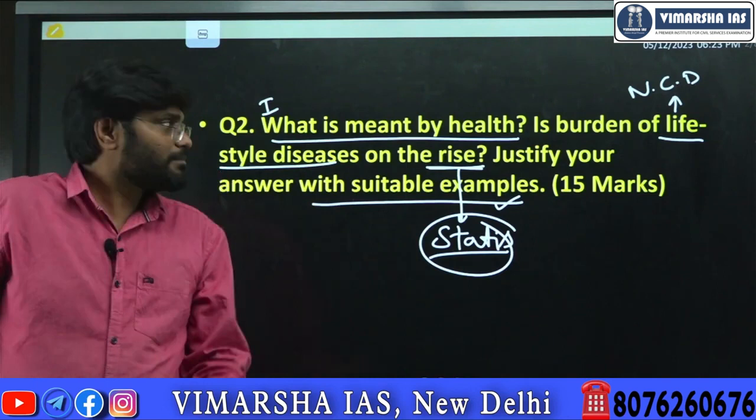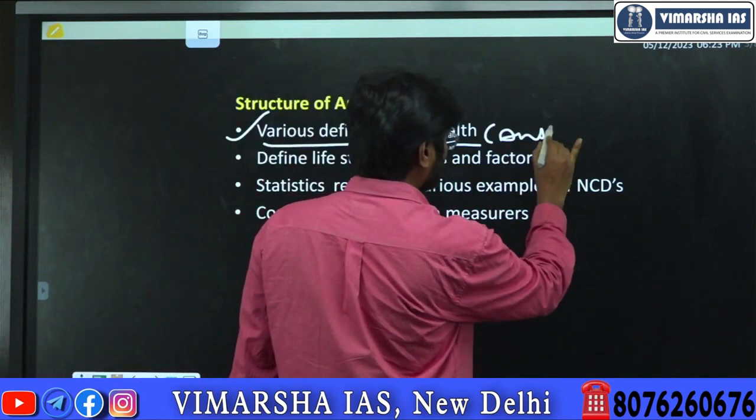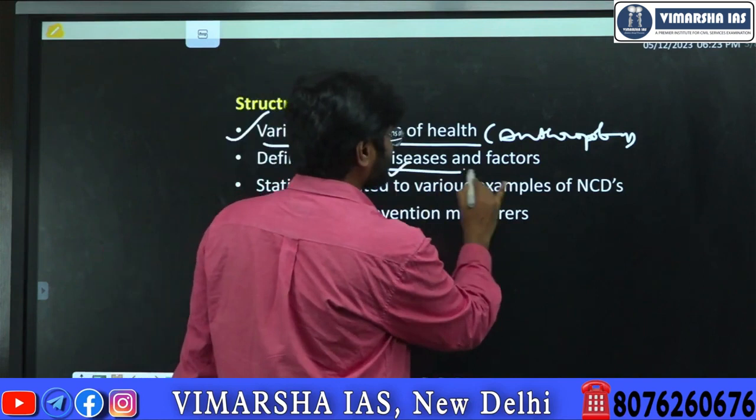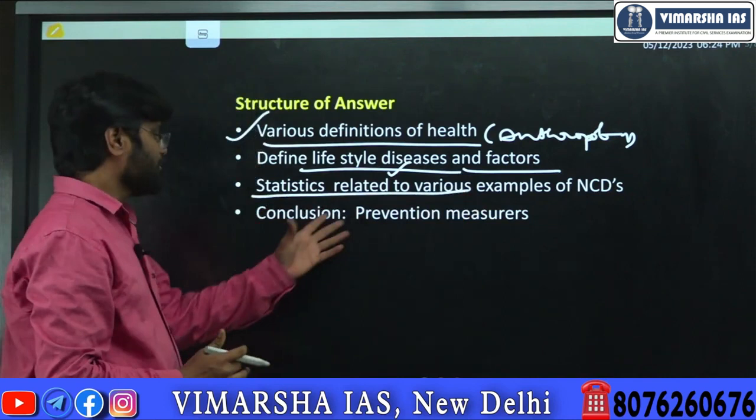The structure of the answer is: first, various definitions and approaches related to health in anthropology. Second, define lifestyle diseases and what are the causative factors for them. Third, statistics related to various NCDs. Fourth, conclusion — here you can include various preventive measures.